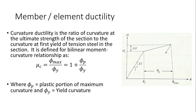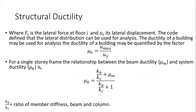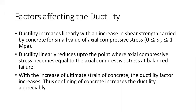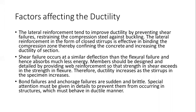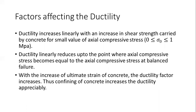In the last lecture we saw how to measure ductility with respect to structural ductility and member ductility. Ductility linearly depends on and reduces after the point where axial compressive stress becomes equal to the axial compressive stress at balanced failure. With increase in ultimate strain of concrete, the ductility factor increases; thus confining of concrete also increases ductility appreciably.